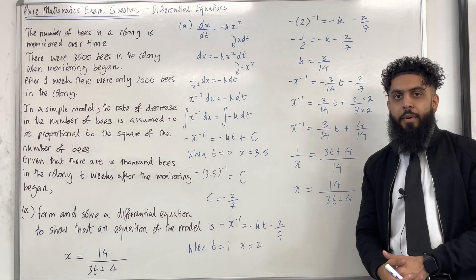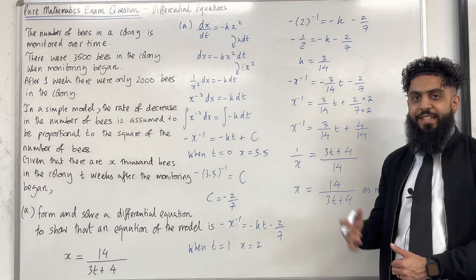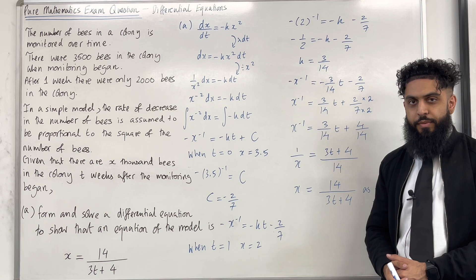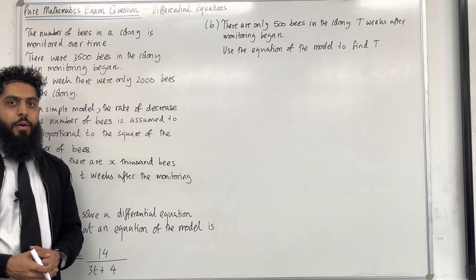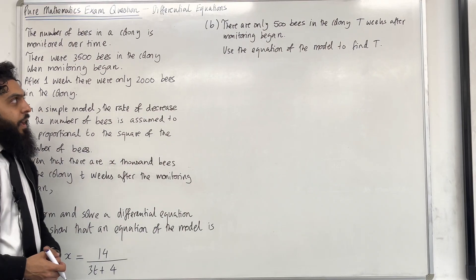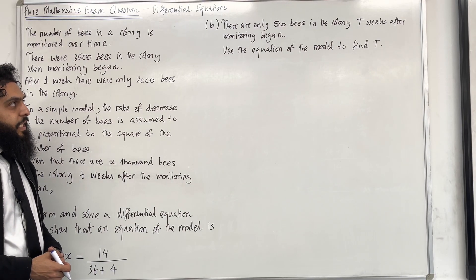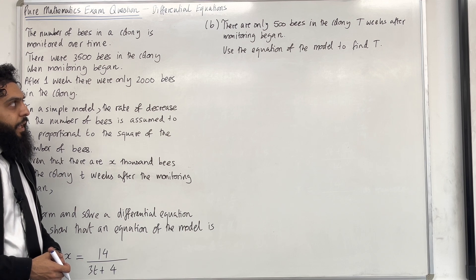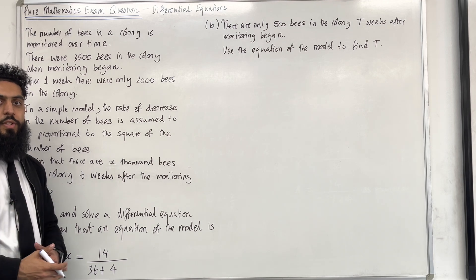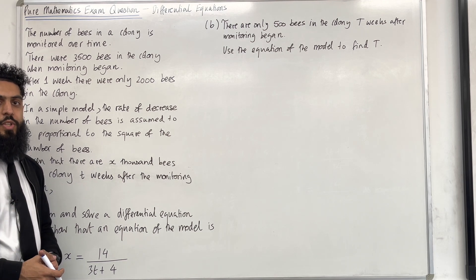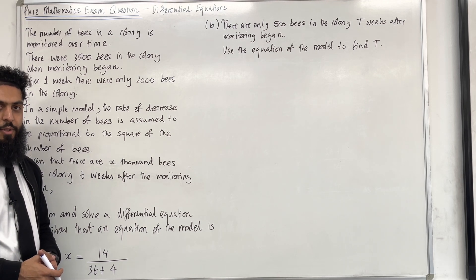So that completes part A of this exam question. Moving on to part B: there are only 500 bees in the colony capital T weeks after monitoring began. Use the equation of the model to find capital T. Please pause the video, have a go at part B, once you've got your complete solution then play the video.